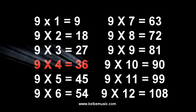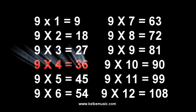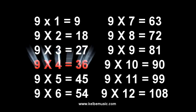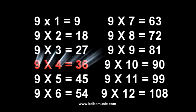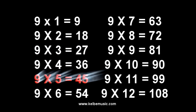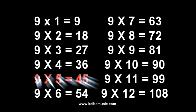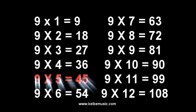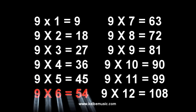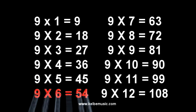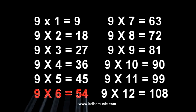9 times 4 is 36, 36. 9 times 5 is 45, 45. 9 times 6 is 54, 54.